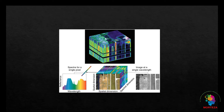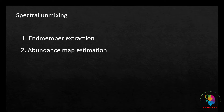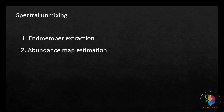Heterogeneous surfaces are a combination of two or more distinct homogeneous surfaces. The pixels belonging to heterogeneous surfaces are known as mixed pixels. The spectral signature of a mixed pixel is a combination of two or more end-member signatures. Spectral unmixing is the process of decomposing the spectral signatures of mixed pixels into their constituent end-members. The spectral unmixing process involves two steps: end-member extraction and abundance map estimation. The spectra of end-members are prominent features in the hyperspectral data and can be used for efficient spectral unmixing, segmentation, and classification.